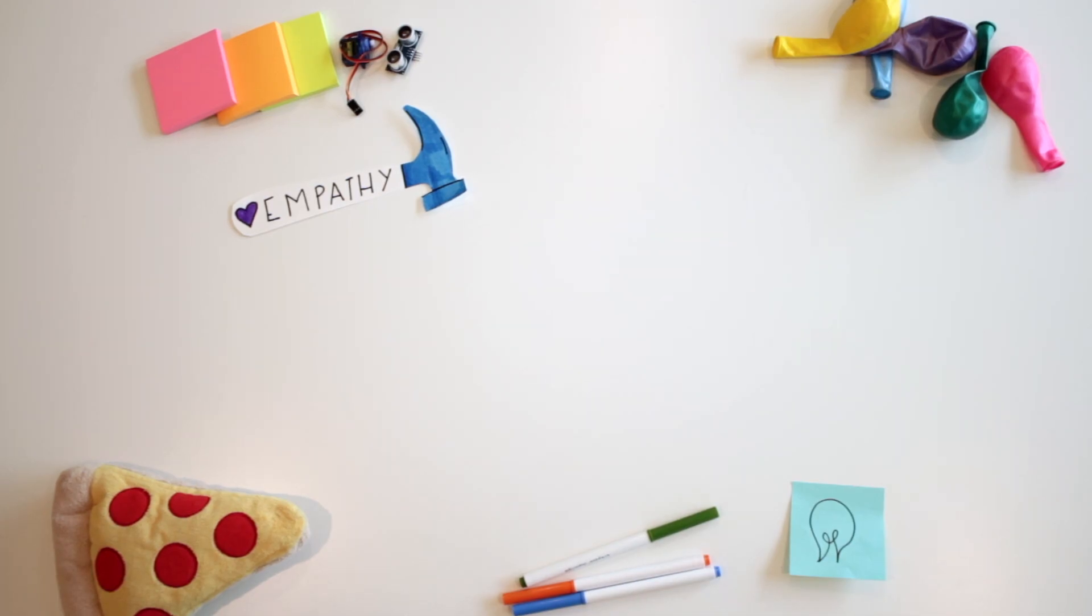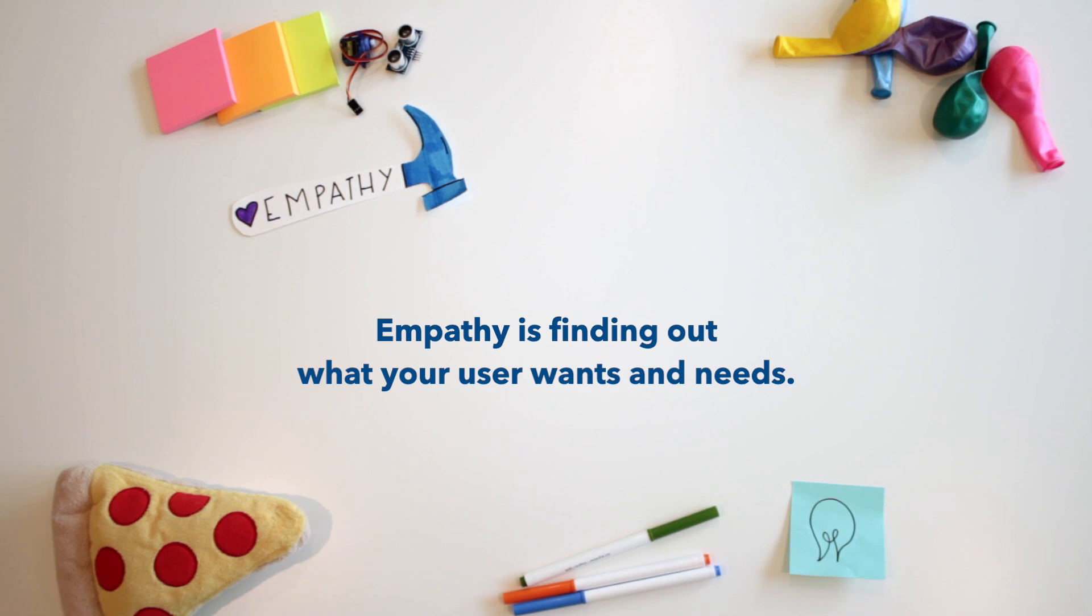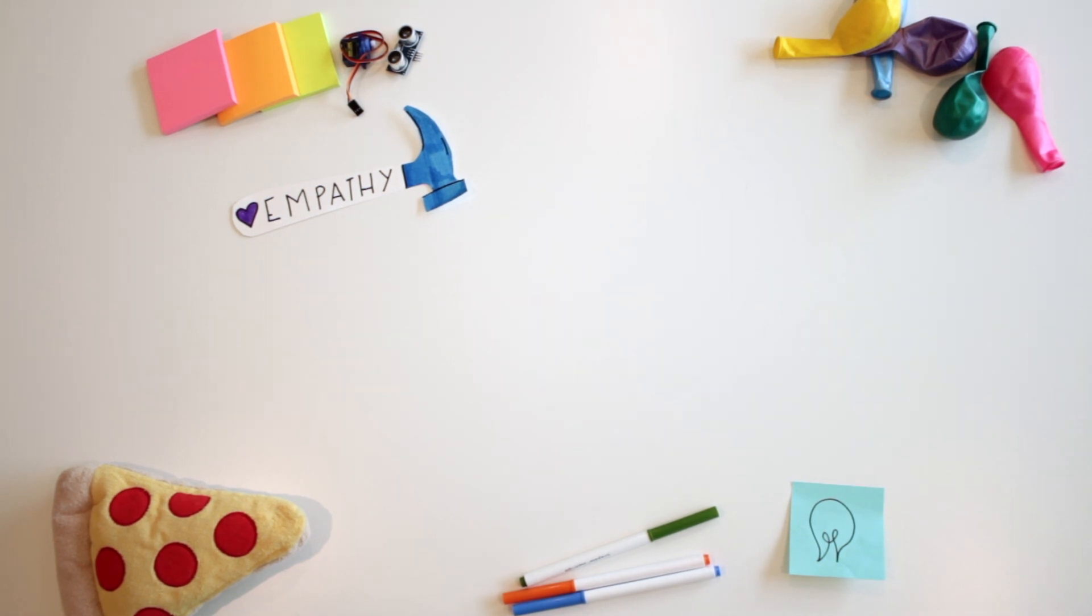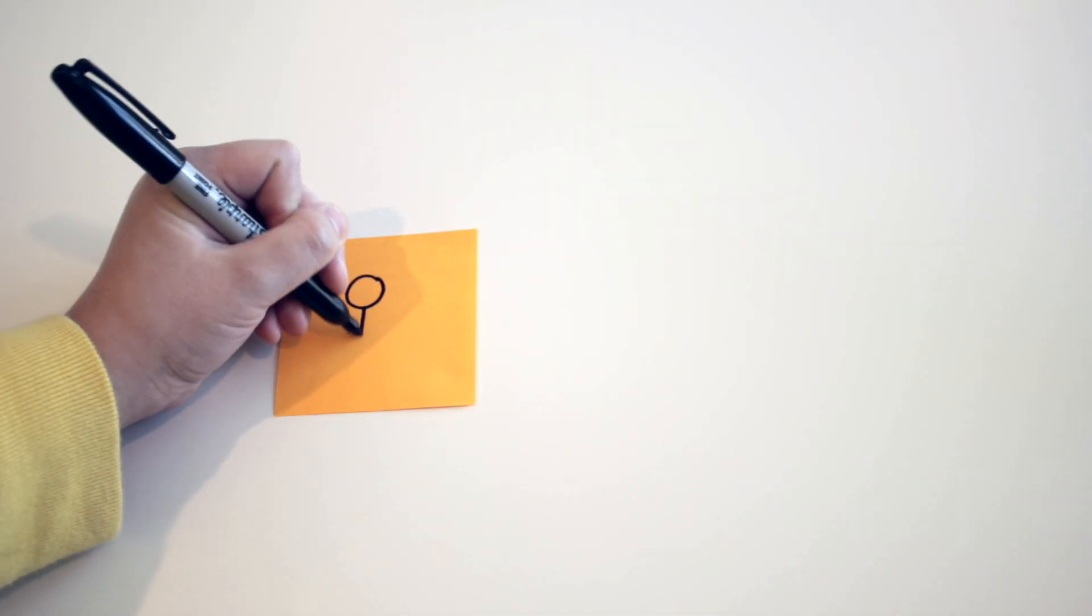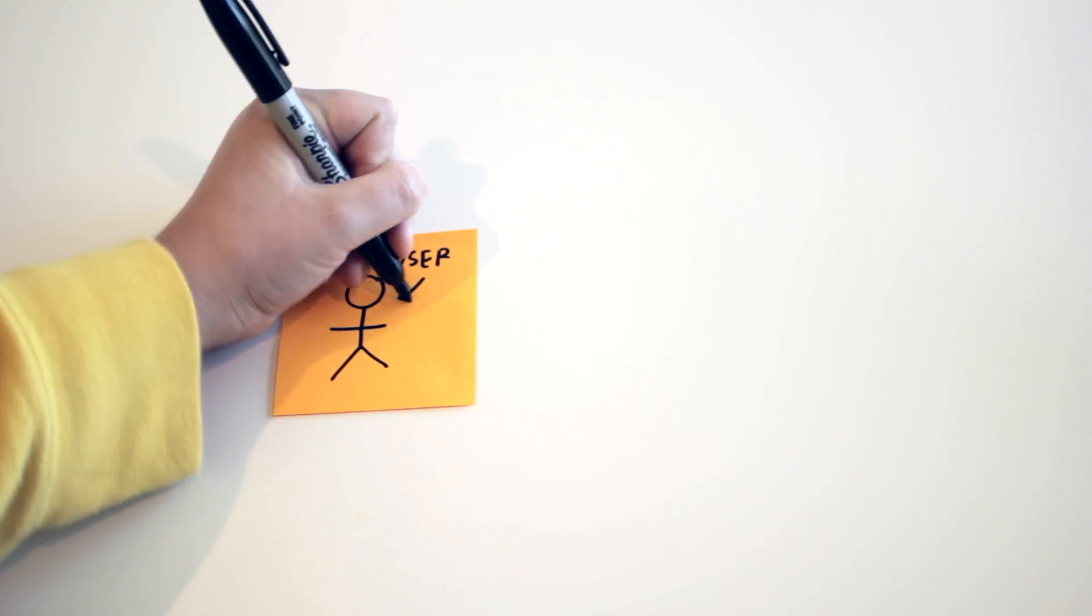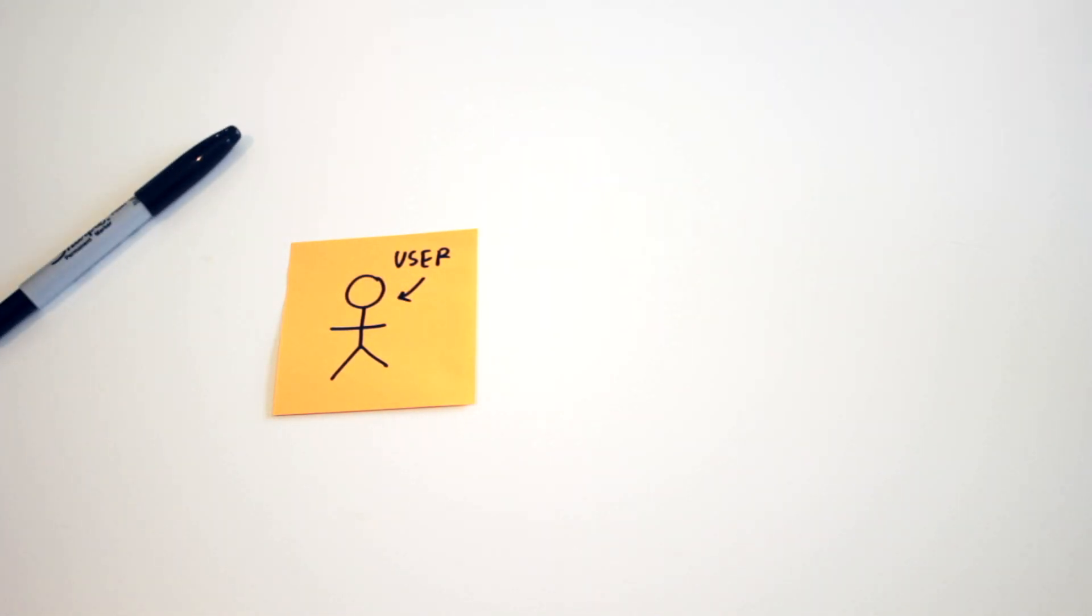Let's start with empathy. Empathy is finding out what your user wants and needs. Our user is someone who wants to take a comfortable shower even if they can't see. In order to take a comfortable shower, our user needs to turn the water on to a comfortable temperature quickly and without using their vision.